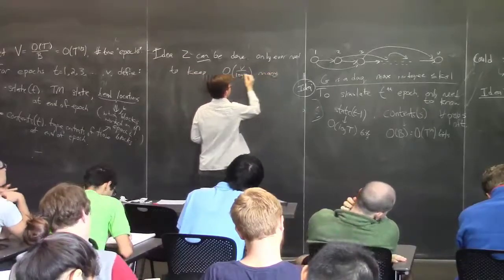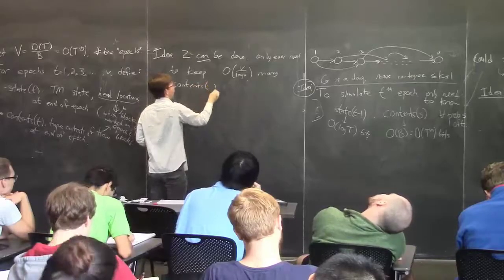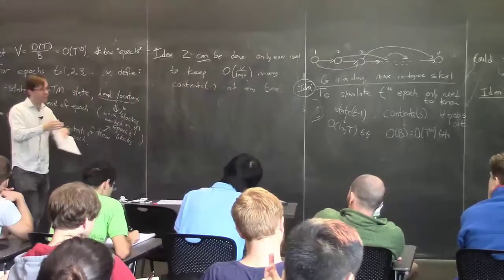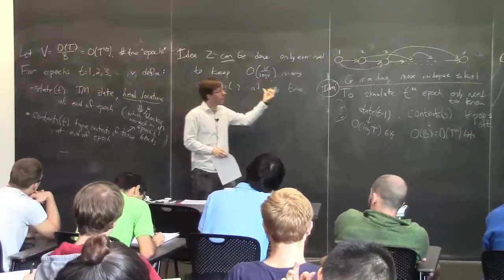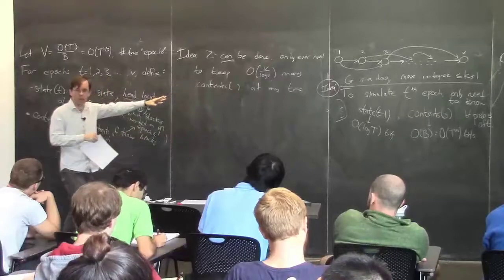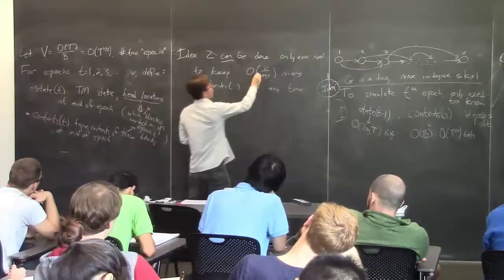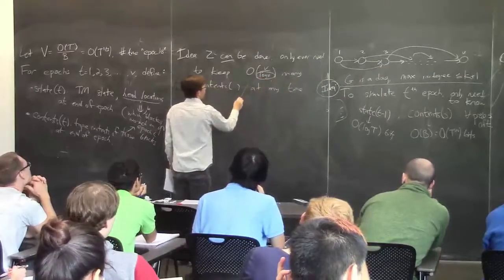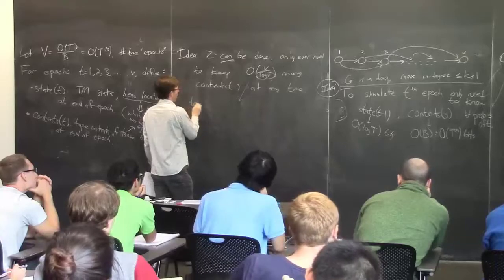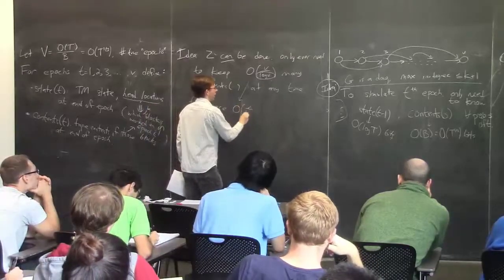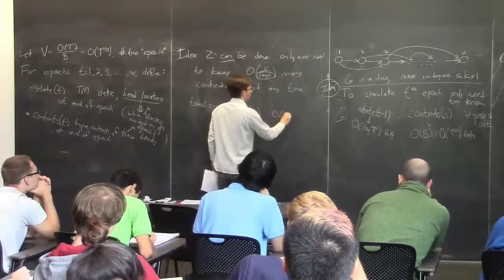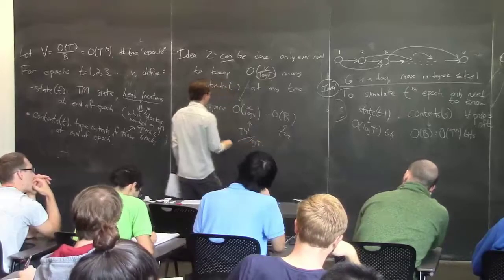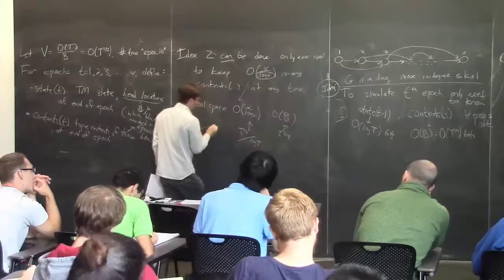What's going to happen is that Idea 2 will in fact come to fruition. It's going to turn out that this can be done in such a way that you only ever need to keep — not all V, but V / log V — many contents around at any one time. You'll recompute and erase, but you'll never be storing more than that many different contents, and you'll still manage to get to the end of the simulation.